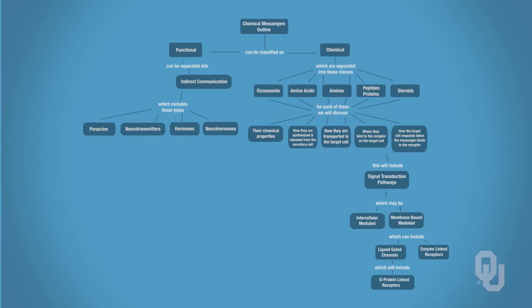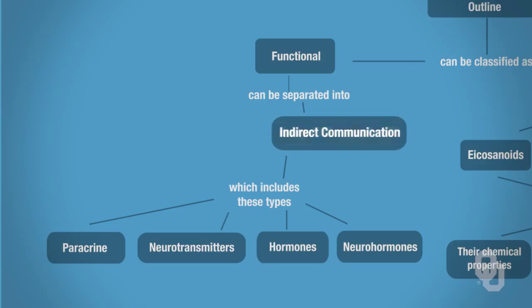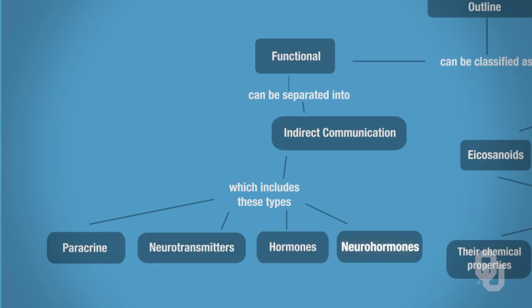This is our roadmap so you can look at your outline and get the big picture of where we're going. The goal is to go through the functional classification, looking at how our chemical messengers can function as a paracrine messenger, neurotransmitter, hormone, or neurohormone — all types of indirect communication.